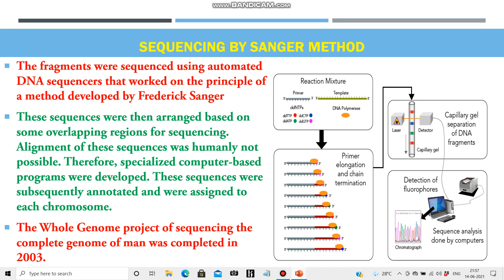Sequencing is done by the Sanger method. The fragments were sequenced using automated DNA sequencers that work on the principle of a method developed by Frederick Sanger, hence this method is called the Sanger method. The sequences were then arranged based on overlapping regions. Alignment of these sequences was humanly not possible, therefore specialized computer-based programs were developed. These sequences were subsequently annotated and assigned to each chromosome. The whole genome project of sequencing the entire human genome was completed in 2003.